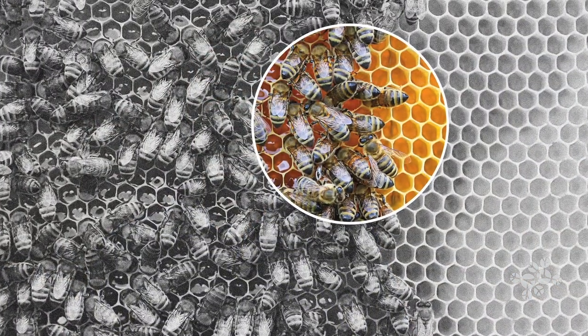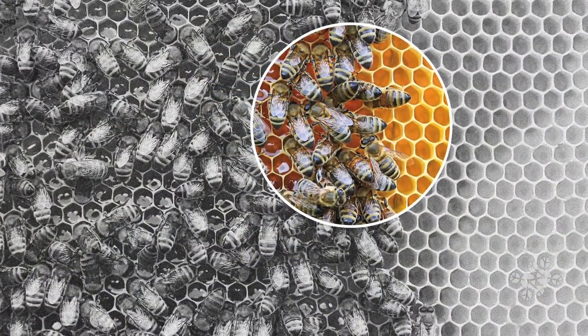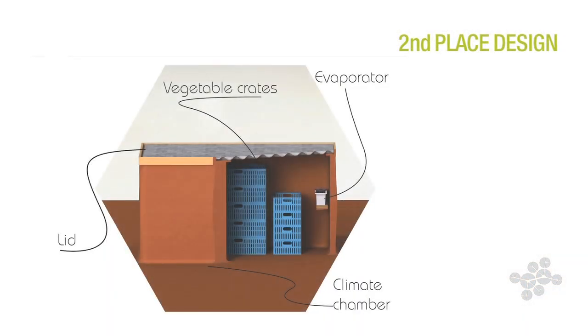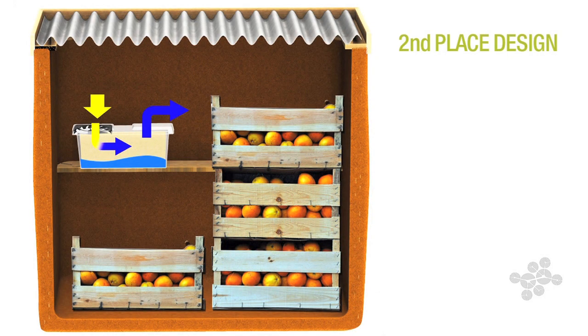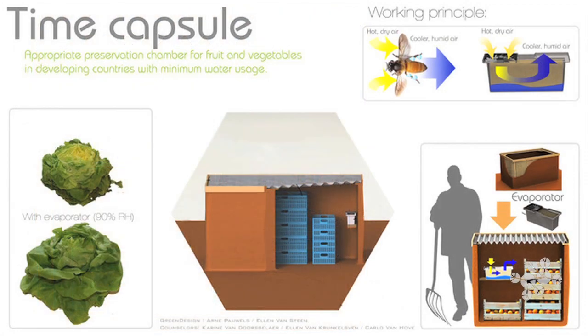Honeybees will actually bring water to the hive, coat the hive with water, and then fan air through the hive using their wings. This gave the team the idea for an evaporative cooler that only costs wholesale $6, so it can be used in countries that don't have a lot of money and extend the life of vegetables.